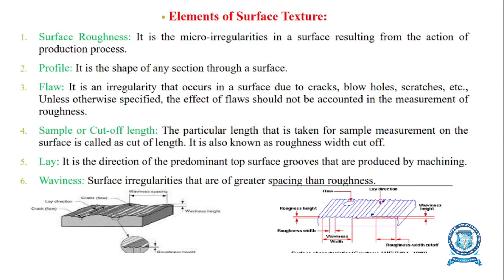The fifth element is lay — the direction of the predominant surface grooves produced by machining. The next element is waviness — surface irregularities of greater spacing than roughness. It is called waviness and is also known as secondary texture.